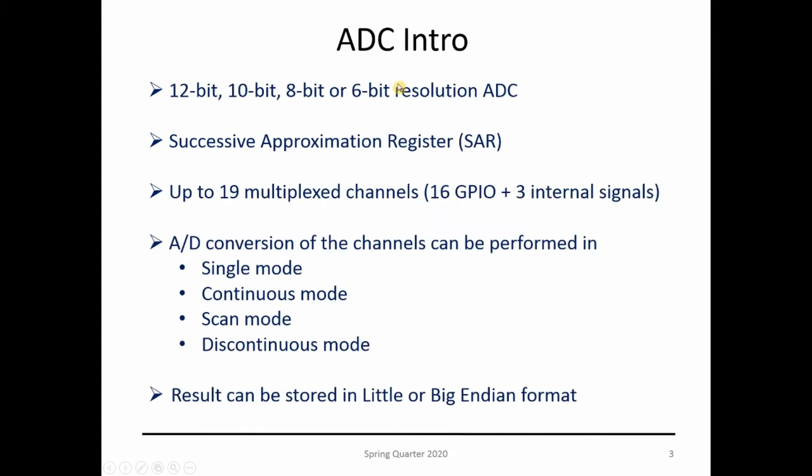The ADC is a maximum 12-bit ADC. You can parameterize it to be 12, 10, 8, or 6-bit, but the maximum resolution is 12-bit. It uses the successive approximation register technique with up to 19 multiplexed channels: 16 GPIO and three internal signals for temperature sensor and battery monitoring. You can apply different modes for conversion: single mode, continuous mode, scan mode, and discontinuous mode. We're going to focus on single mode and continuous mode. The result can be stored in little or big endian format.